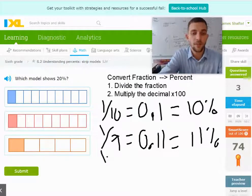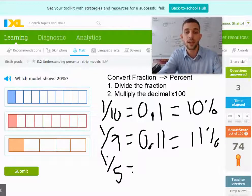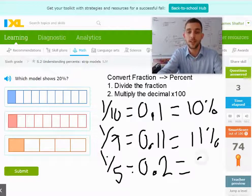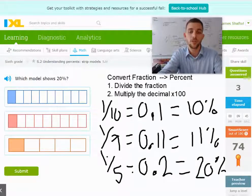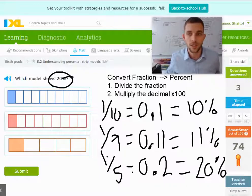And then finally, we have 1 fifth, and that will be 1 divided by 5, and so I get 0.2. And you should have that one memorized, and that's 20 percent. So the correct answer here is the last one, which is 20 percent.